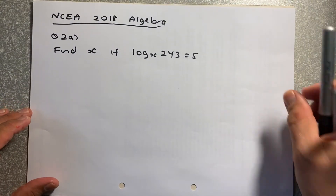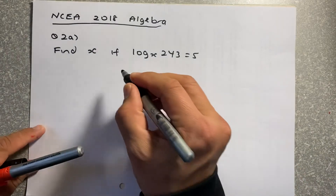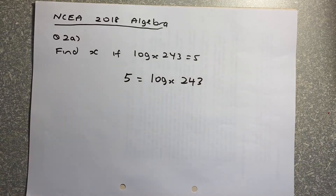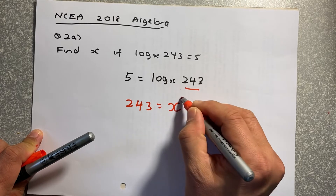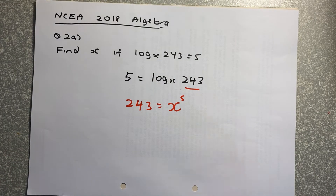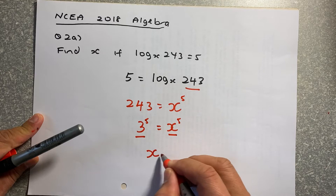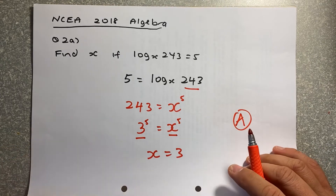The next question is from the NCA 2018 exam: find x if log base x of 243 equals 5. The single number must be in front, so we write 5 equals log base x of 243. Then the last number becomes your first number: 243 equals x to the power of 5. Since 243 is 3 to the power of 5, we can conclude that x equals 3. Again, an achieved-level question.